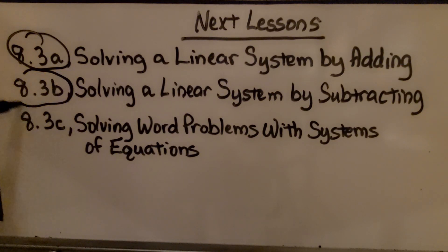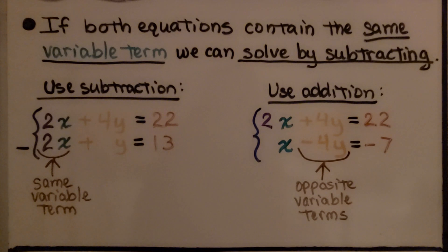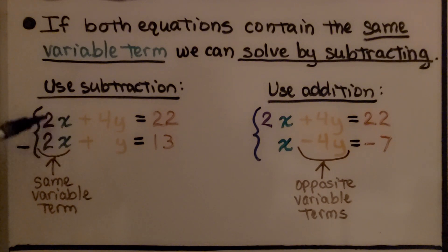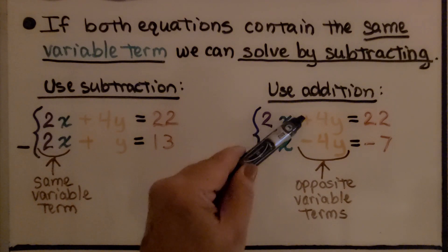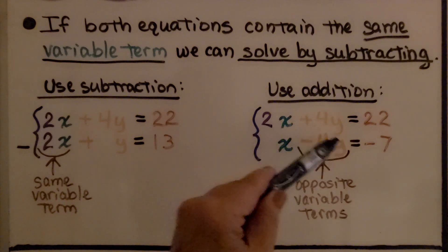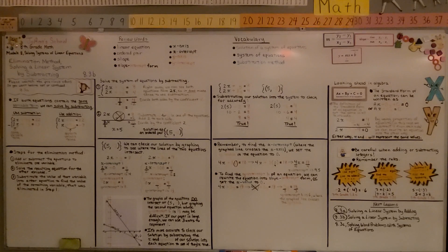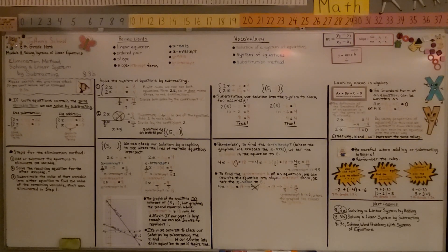We're finished with part B. Remember: if we have the same variable term — like both positive 2x — we use subtraction. If we have opposites, like plus 4y and minus 4y, we use addition. Join me for the last part of the lesson, part C: solving word problems with systems of equations.